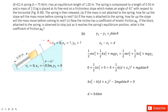Similarly, y2 minus y1 equals d sine theta. But now we also need to find x2. Since the box moves a distance d up the slope, x2 minus x1 equals d. That is how much the box moved.